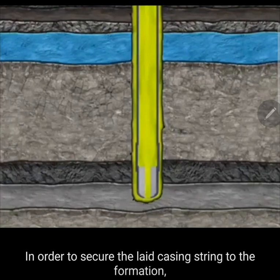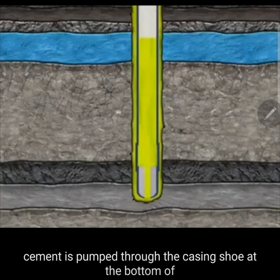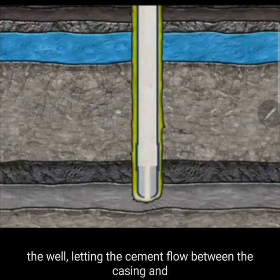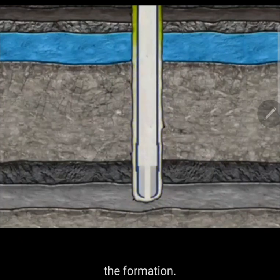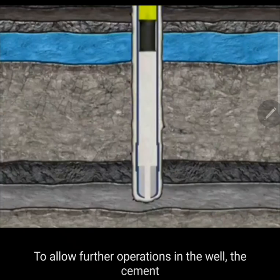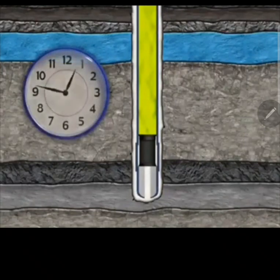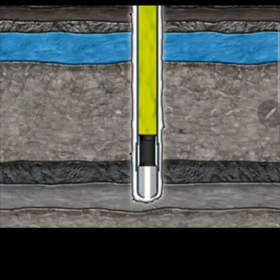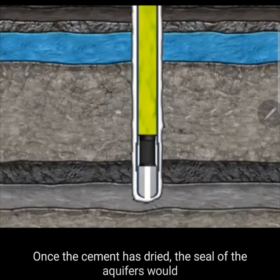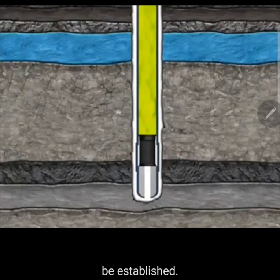In order to secure the laid casing string to the formation, cement is pumped through the casing shoe at the bottom of the well, letting the cement flow between the casing and the formation. To allow further operations in the well, the cement requires sufficient curing time. Once the cement has dried, the seal of the aquifers would be established.